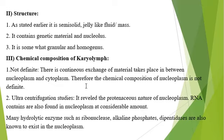Ultracentrifugation studies of the nucleoplasm reveal its proteinaceous nature, and RNA contents are also found in nucleoplasm in considerable amounts. After centrifugation studies, scientists find that nucleoplasm contains proteins and some RNA materials. Also, many hydrolytic enzymes such as ribonuclease, alkaline phosphatase, and dipeptidases are known to exist in the nucleoplasm.